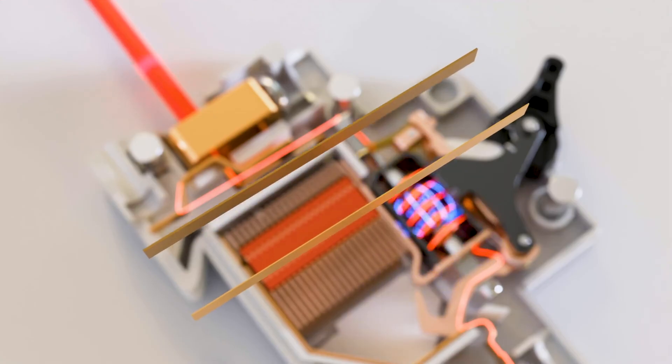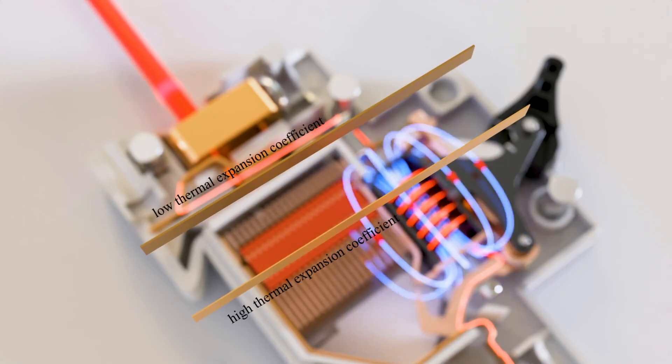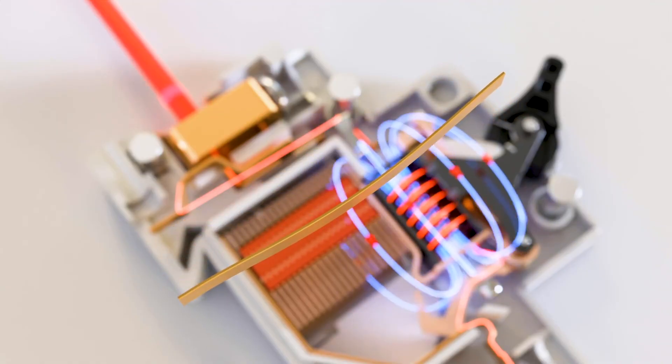A bimetallic strip is a component made up of two different metals bonded together. These metals have different coefficients of thermal expansion. It means that when these metals are heated, they expand at different rates.